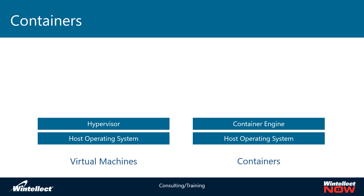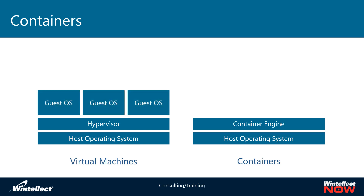They diverge on the next layer on virtual machines, which is a guest operating system. The guest operating system in a virtual machine interacts with the hardware abstraction layer provided by the hypervisor, so the guest operating system is actually interacting with virtual hardware, while in containers, the virtualization isn't so much a hardware abstraction layer — rather, it's a kernel abstraction.